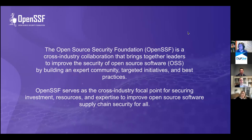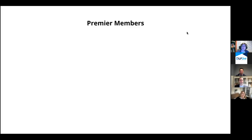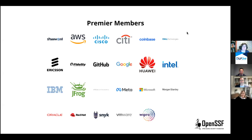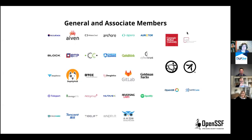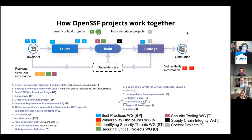The Open Source Security Foundation is a cross-industry collaboration that is part of the Linux Foundation. Its purpose is to improve the security of open source software by building an expert community. It was established in late 2020 and switched to a member-funded model in late 2021. It has a huge number of folks involved — here are the premier members — quite a long list, as well as general and associate members.